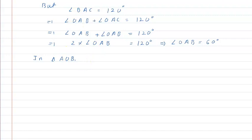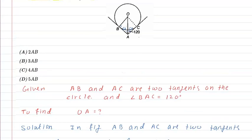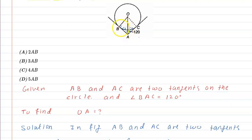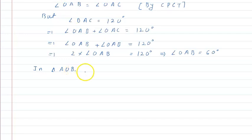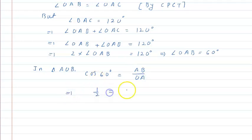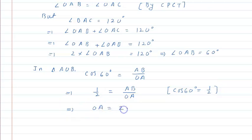In right triangle OAB, angle OAB = 60 degrees. The hypotenuse is OA and the base is AB. We use the cosine ratio: cos 60° = base/hypotenuse = AB/OA. From the trigonometric table, cos 60° = 1/2. So 1/2 = AB/OA, which implies OA = 2 × AB. Therefore OA is equal to twice AB.